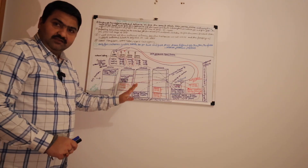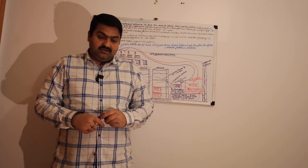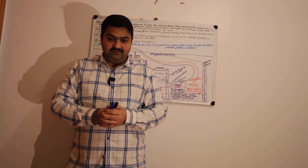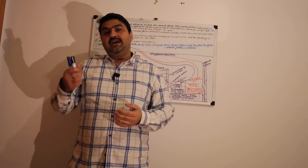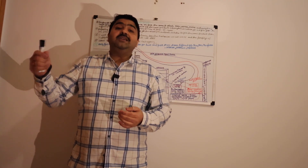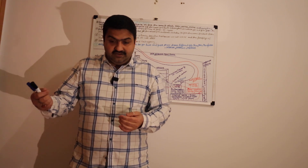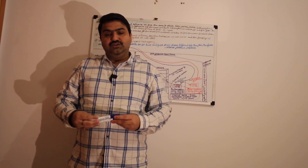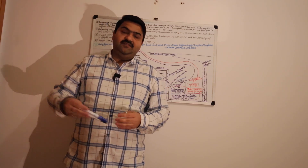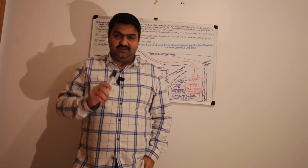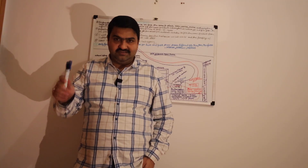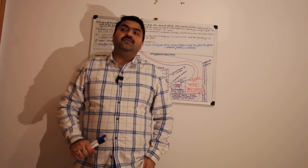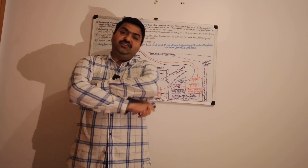Suppose we have multiple customers in a complex warehouse business process — customer one, two, three, four, up to 20 customers. We need to send products to them via outbound delivery. We have five different kinds of materials stored in the warehouse in different hierarchy storage types.